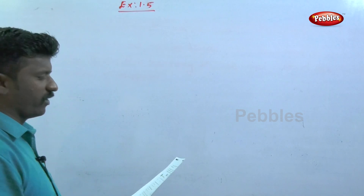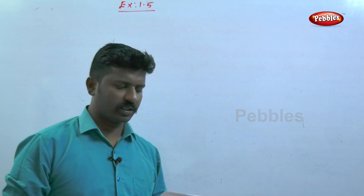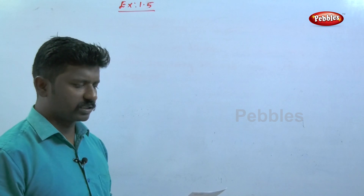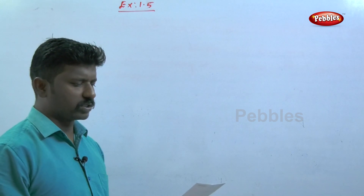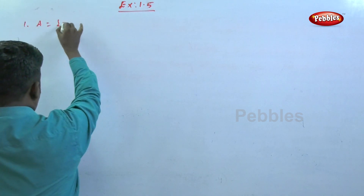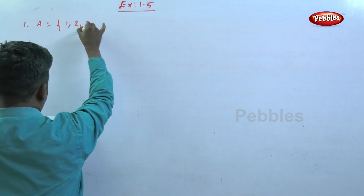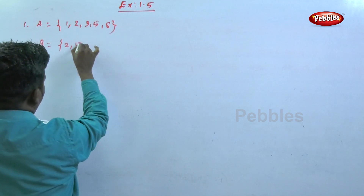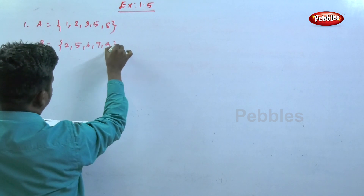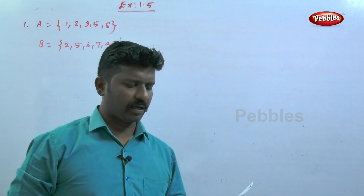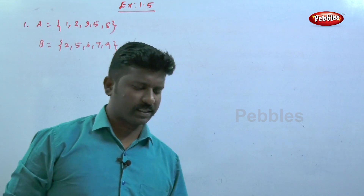The next exercise is 1.5 multiple choice questions. The first question: the universal set is from 1 to 9, where X is less than 10. Set A equals {1, 2, 3, 5, 8} and set B equals {2, 5, 6, 7, 9}. The question asks for n(A∪B)'.